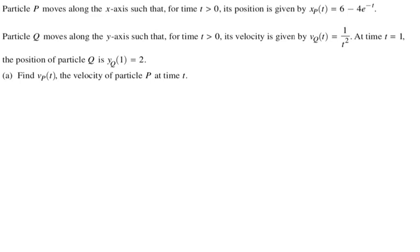Particle Q moves along the y-axis such that for time t greater than zero, its velocity is given by v_Q(t), which I'm just going to say vQ of t from now on, is one over t squared. At time t equals one, the position of particle Q is y_Q(1) equals two. So that's all given information.